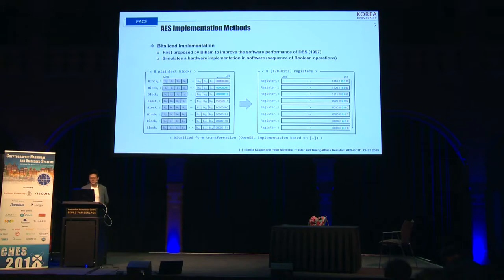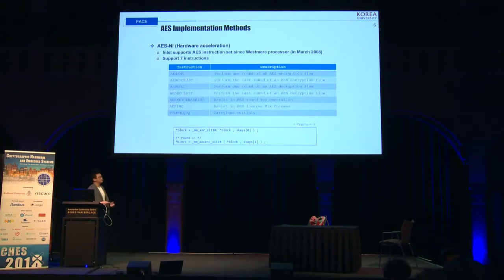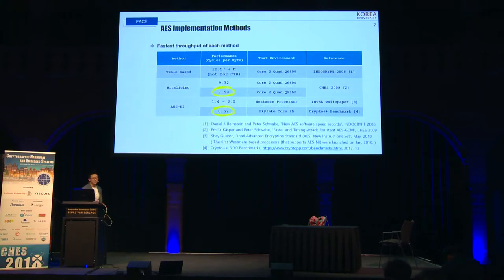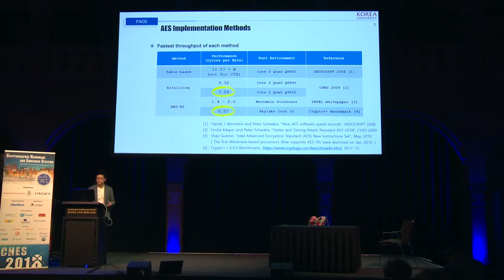Finally, Intel announced a set of instructions called AES-NI that provides dedicated hardware support for AES acceleration and circumvents cache leaks. By using the AES-NI instruction set, a program can perform a full round in a single instruction. This table shows the fastest result of each implementation method. A simple numerical comparison is not appropriate because the testing environments are all different; however, through this result we can briefly rank each method by its performance.